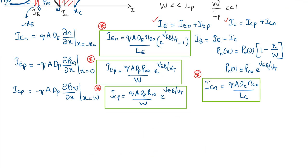We observe that I_EP equals I_CP. This is because W is very, very small compared to the diffusion length of holes in the base. When W is very small, the recombination current can be neglected, in which case I_EP = I_CP. This is a valid assumption under these conditions.